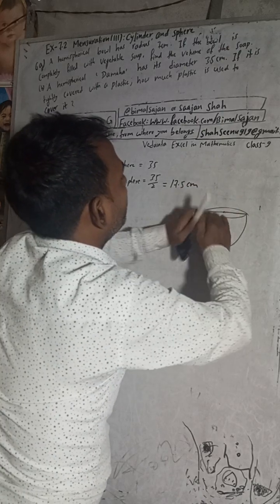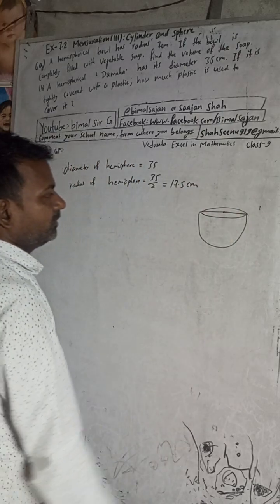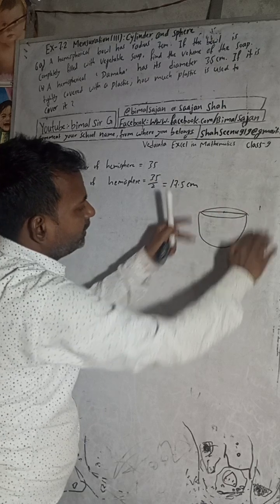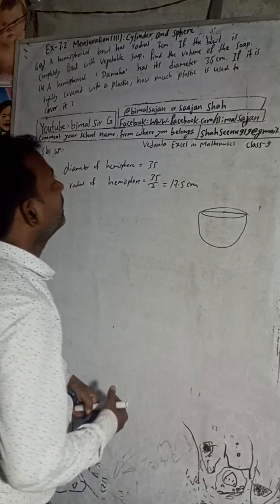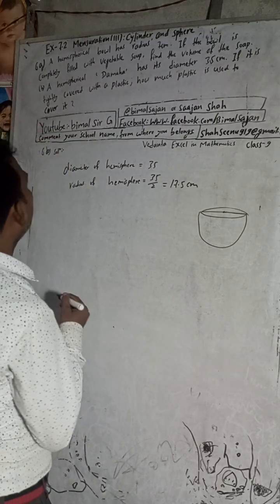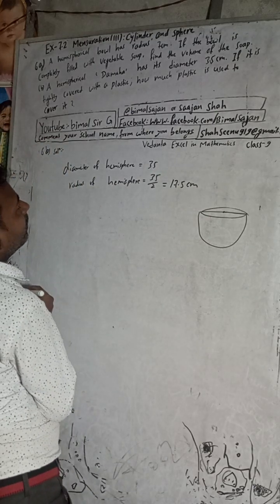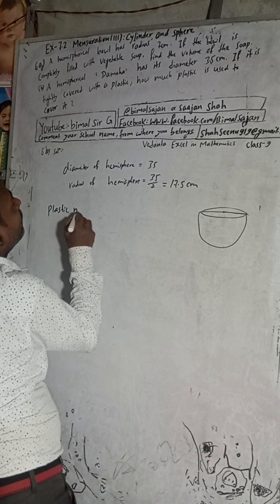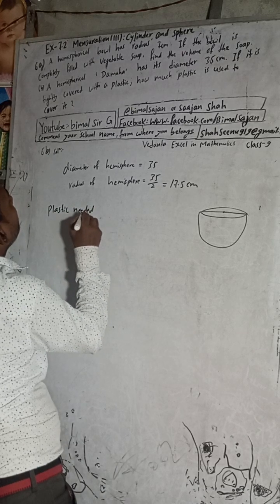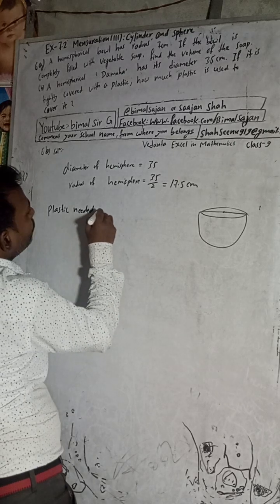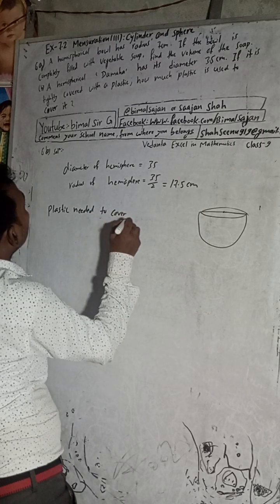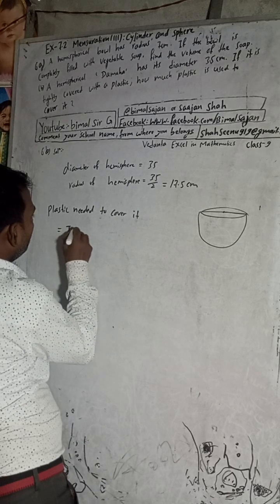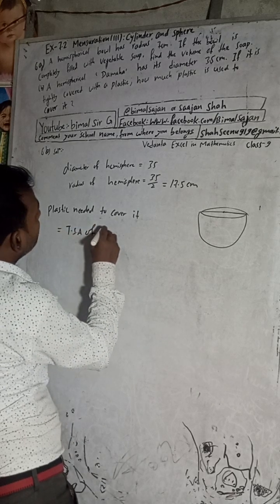The plastic is covered tightly from the outer surface. To know how much plastic is needed, we need the total surface area. So plastic needed to cover it is equal to the total surface area of the hemispherical dome.